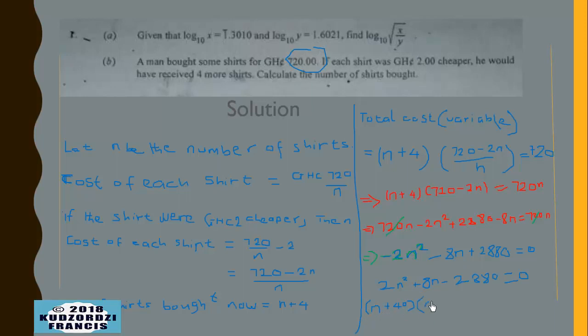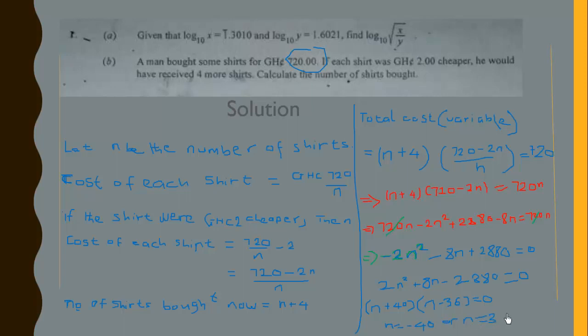When we factor the quadratic, we obtain n plus 40 into n minus 36 equals 0, so n is either negative 40 or positive 36. Since n must be a positive number of shirts, the number of shirts bought is 36.